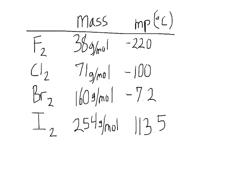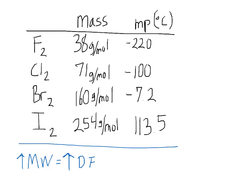So increasing the molecular weight increases the dispersion force, and if we increase the intermolecular force, we increase the strength holding the molecules together, and therefore it'll take more energy to separate them. Higher molecular weight equals stronger dispersion force, which means a higher melting point. The MP here stands for melting point. So if we look at fluorine, at the top of the group, its molecular weight is 38 grams per mole and its melting point is negative 220 degrees Celsius.